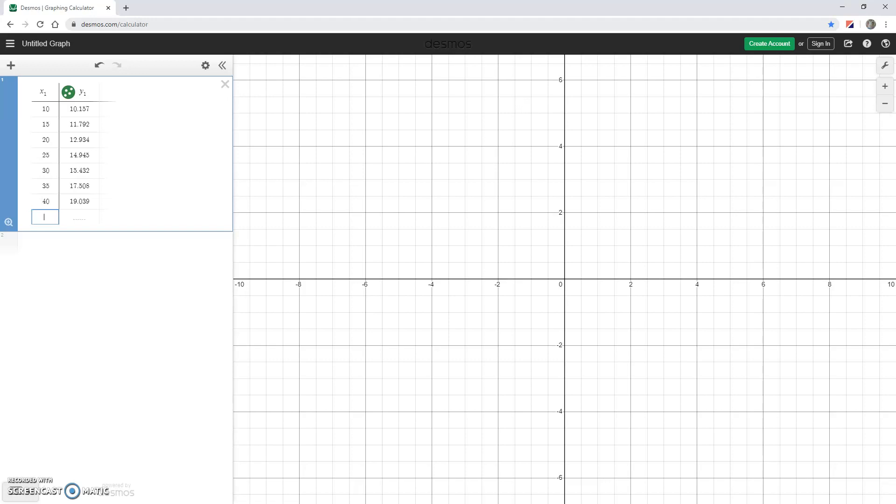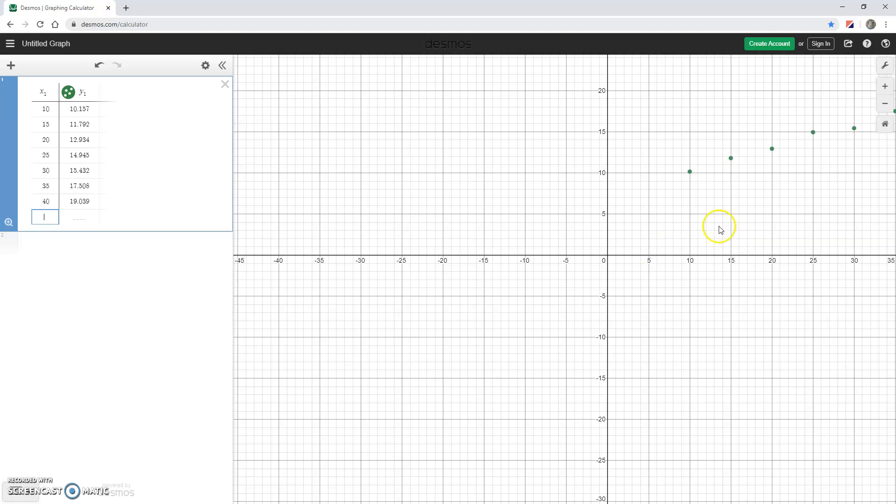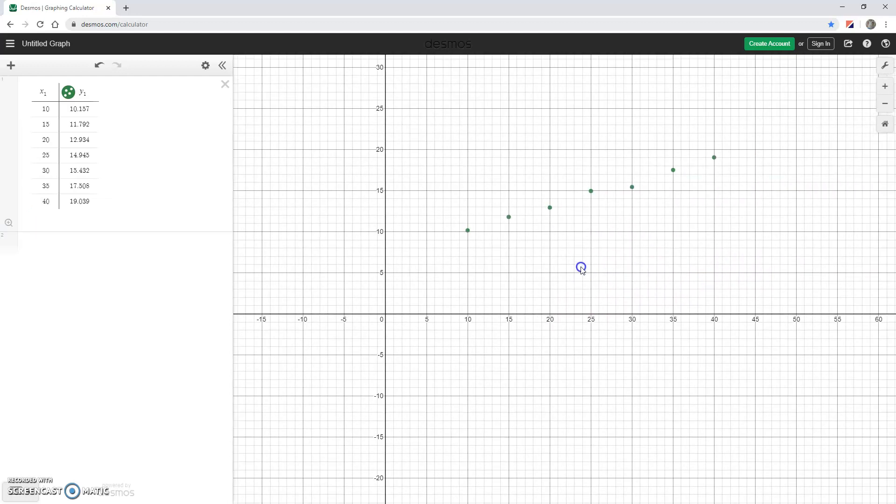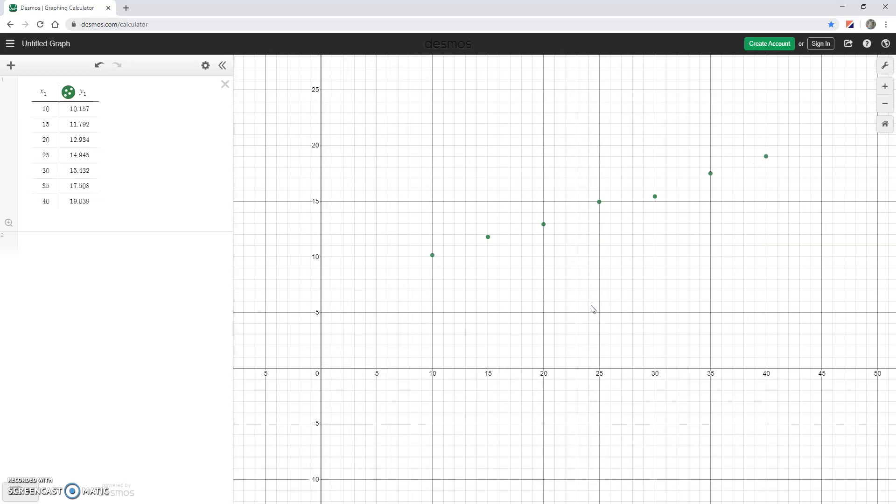I've entered this data into Desmos, and I'm reset back at the initial viewing window Desmos starts you off with, so we need to look at adjusting that view, which I'm going to do just by scrolling in this case, until I see those data points that I want. We can also use that wrench icon to set our minimum and maximum values.